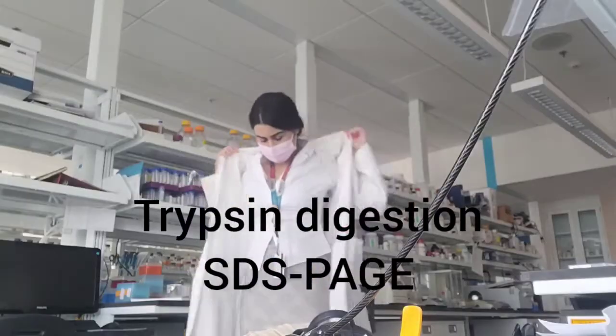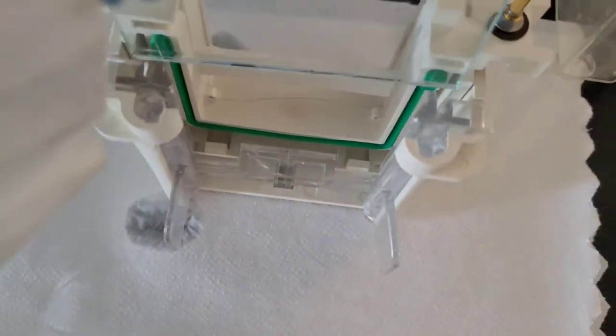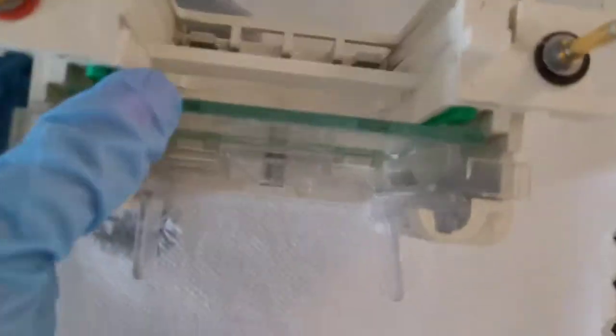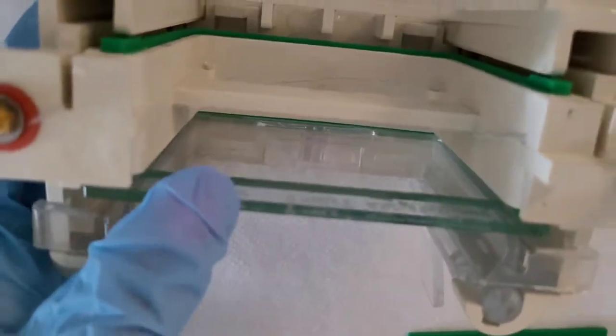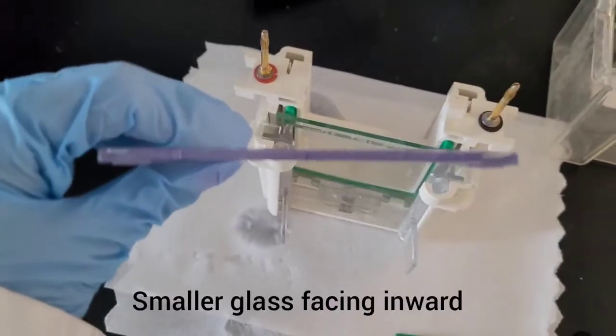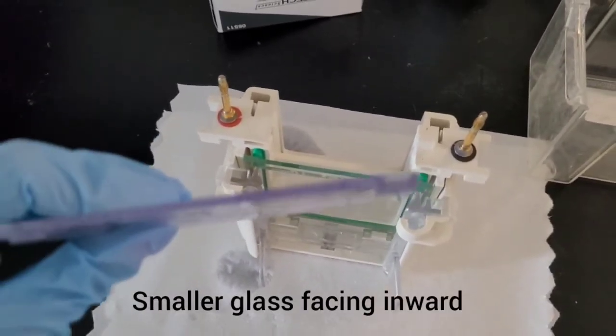Today I want to show you how to do trypsin digestion with SDS-PAGE. First, you have to set up the gel. You want the smaller glass side facing inside, and for the plastic dam, you want the smaller indentation facing inside so the bigger glass faces outside.